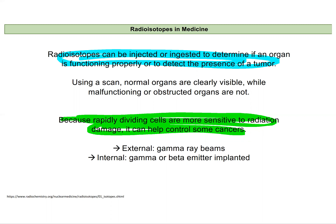We can do this in a couple of ways. There are external methods where you would use gamma ray beams — energy beams directed at the site — or internal methods, where a substance is ingested or injected that emits gamma radiation or beta particles.